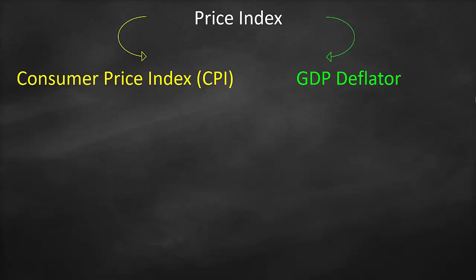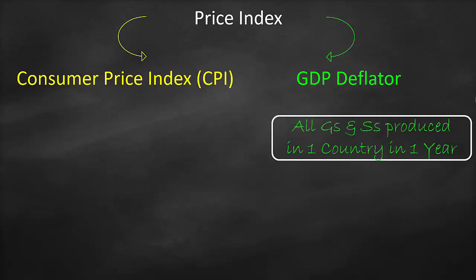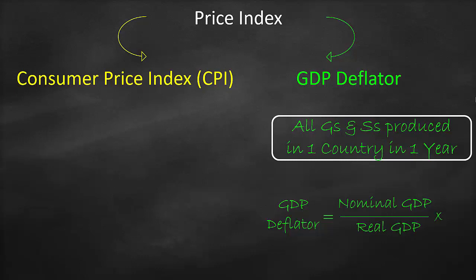Do you remember what is the definition of GDP? All goods and services produced in a country in one year. Therefore, the GDP deflator reflects the change in prices for all goods and services within an economy. We can calculate the GDP deflator as nominal GDP divided by real GDP, multiplied by 100.